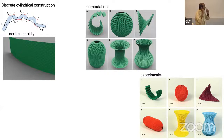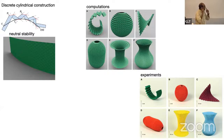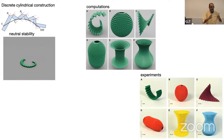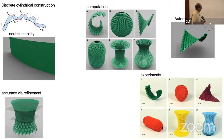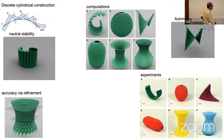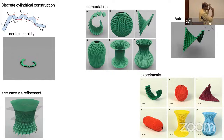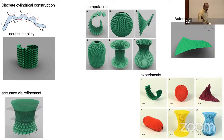Levi Dute computed these using an off-the-shelf nonlinear optimization program in MATLAB — fmincon — and after a couple of months created physical instantiations. Each one is an actual experiment matching computation. You can also increase the number of folds and reduce their size for greater accuracy: from a coarse approximation of a hyperboloid of revolution, to slightly more refined, to even more refined where you can't see the folds. But as soon as you have a large number of variables and nonlinear constraints, global optimization is extremely difficult and you often get stuck in local minima.